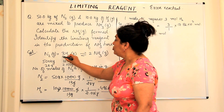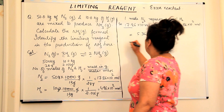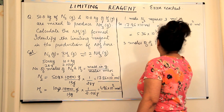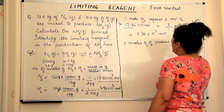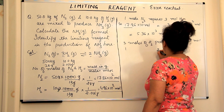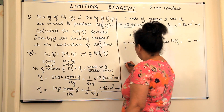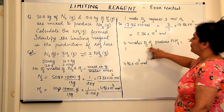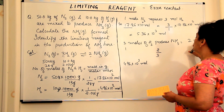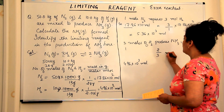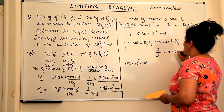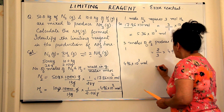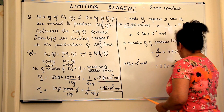Going back to the balanced chemical equation: 3 moles of hydrogen produces 2 moles of ammonia. So 1 mole of hydrogen produces 2/3 moles of ammonia. We have 4.96 × 10³ moles of hydrogen. Using the unitary method: (2/3) × 4.96 × 10³ moles of ammonia would be produced, which equals 3.3 × 10³ moles of ammonia.